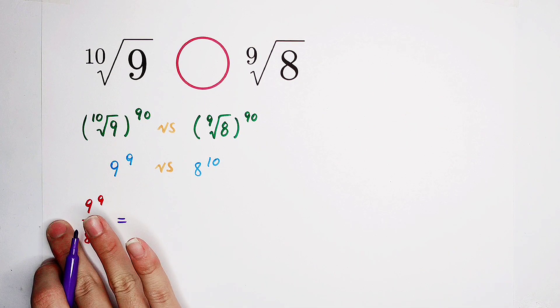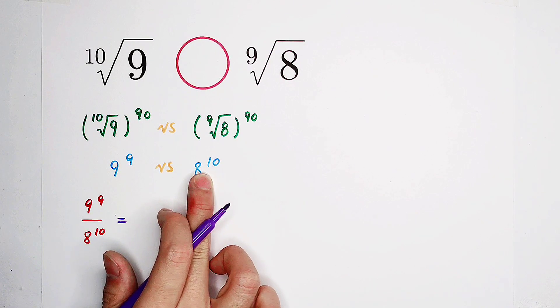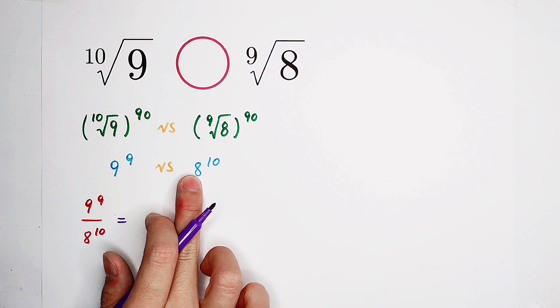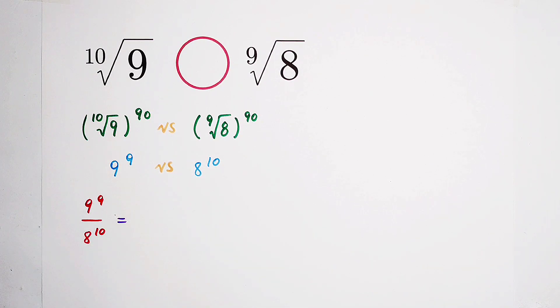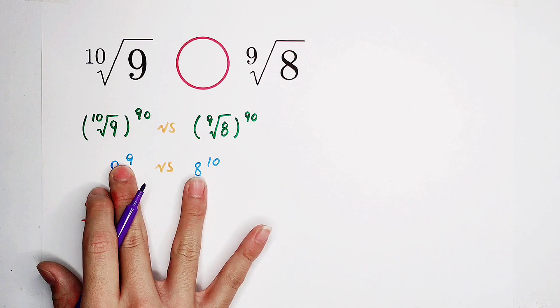If it is smaller than 1, this is smaller than this. If it is bigger than 1, this is bigger than this. If it is equal to 1, it's not possible. Impossible. Why? Because these two numbers cannot be equal.